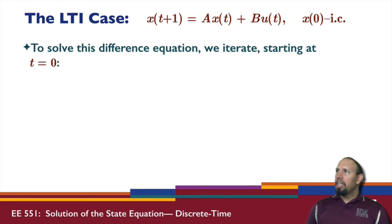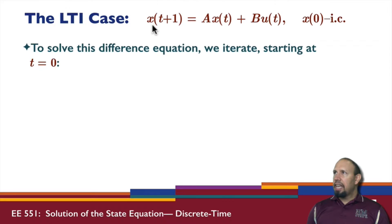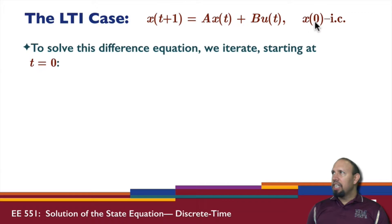In the linear time-invariant case, we have this state model. We're concerned primarily with the state equation, not the output equation. x at the next time is equal to some constant matrix times x at the present time, plus some constant matrix times the input at the present time. And we have some initial condition x-naught.